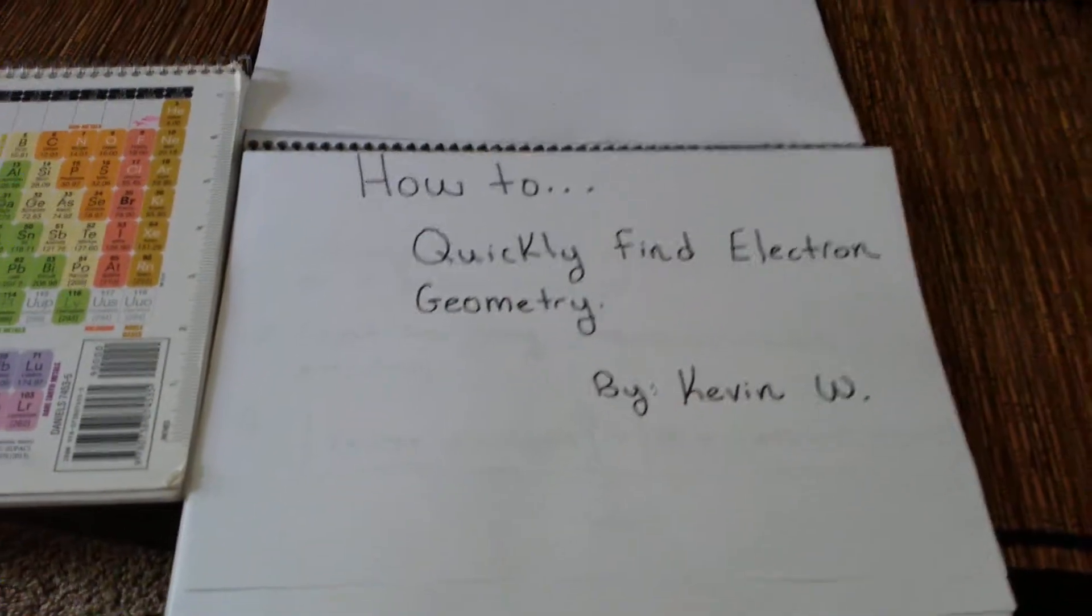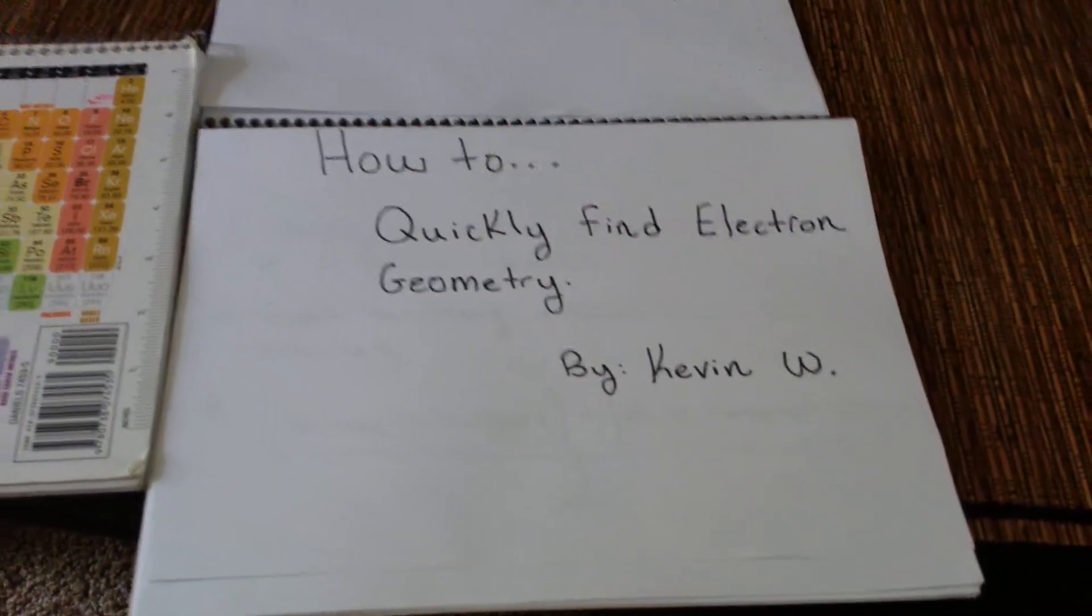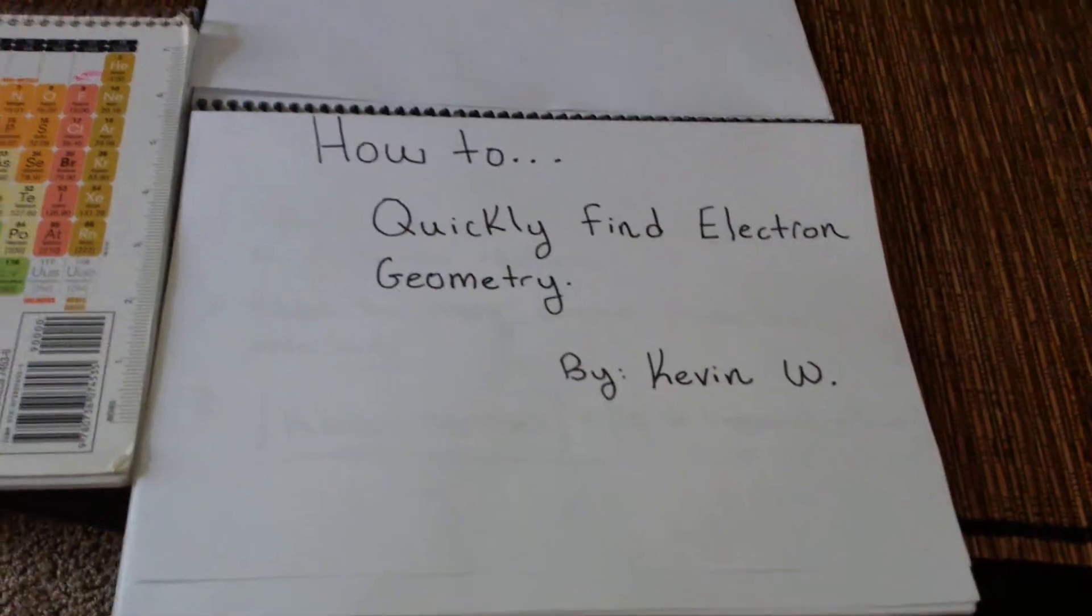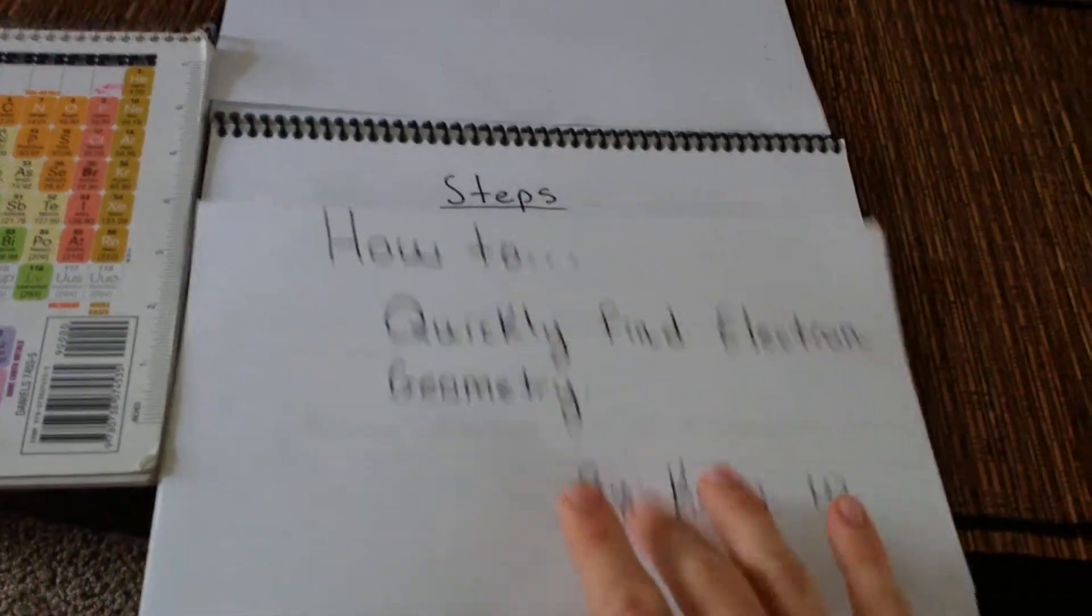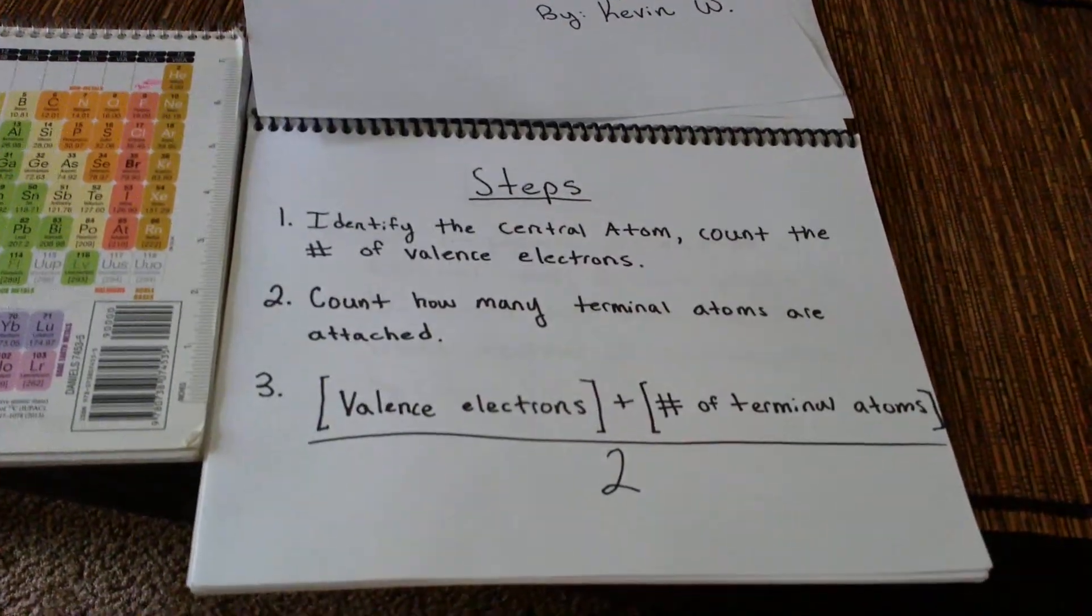Hey guys, so I recently learned a really fast and convenient way to find electron geometry, so I thought I'd share. Let's get started. There's a few steps. Step one: you're going to identify the central atom and then count the number of valence electrons of the central atom.